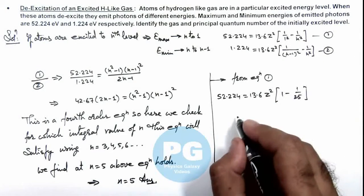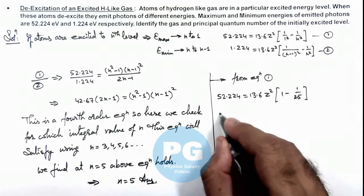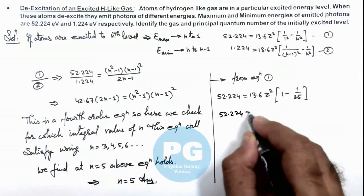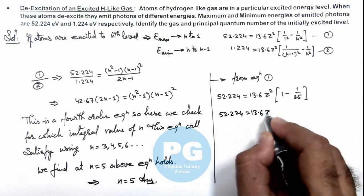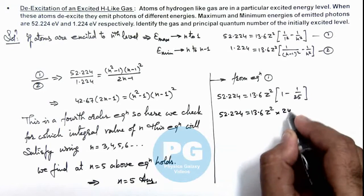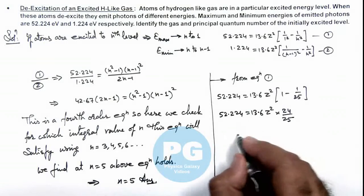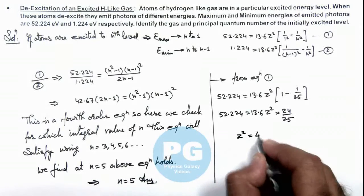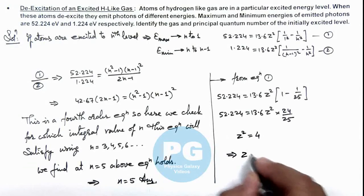Then you can see here we are getting 52.224 = 13.6 z² × (24/25). Further simplifying this gives z² = 4, implies the value of z is 2.